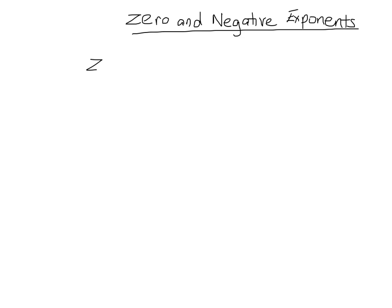In this video, we'll be looking at exponents of zero and exponents that are negative as well. We're going to look at why they are the way they are, and we're going to work through a few examples. So let's start by looking at exponents of zero — let's just call them zero exponents.